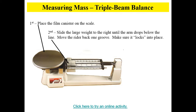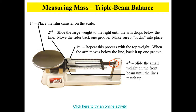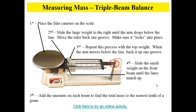Here's how you use the triple beam balance. First, place the film canister or whatever you're measuring on the scale. Slide the large weight to the right until the arm drops below the line, then move the rider back one groove — make sure it locks into place. Repeat this process with the top weight, and then the smallest weight, which has no grooves. Slide the small weight on the front beam until the lines match up, representing zero in the middle. Then add the amounts on each beam to find the total mass to the nearest tenth of a gram.